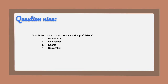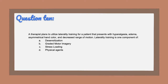Question nine: what is the most common reason for skin graft failure? A, hematoma. B, dehiscence. C, edema. Or D, desiccation. Question ten: a therapist plans to utilize laterality training for a patient that presents with hyperalgesia, edema, asymmetrical hand color, and decreased range of motion. Laterality training is one component of: A, desensitization. B, graded motor imagery. C, stress loading. Or D, physical agents.